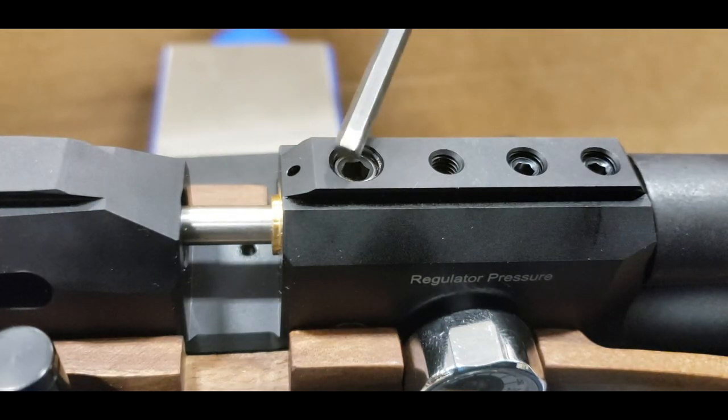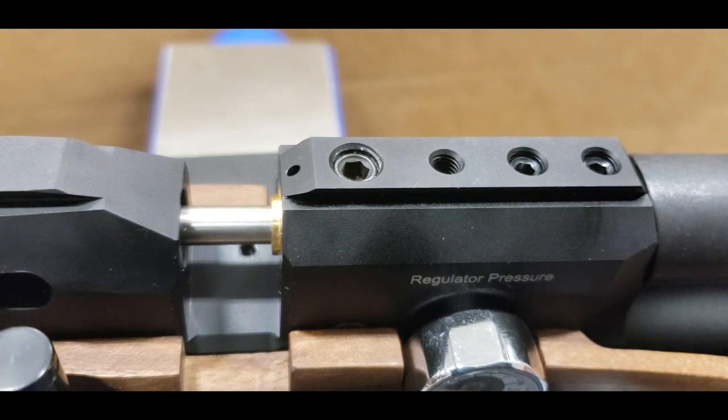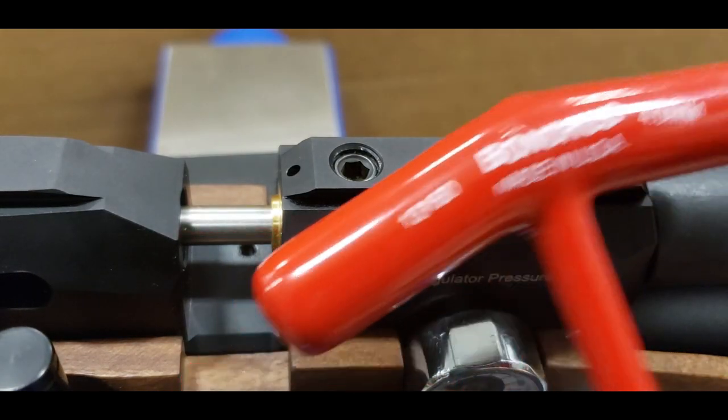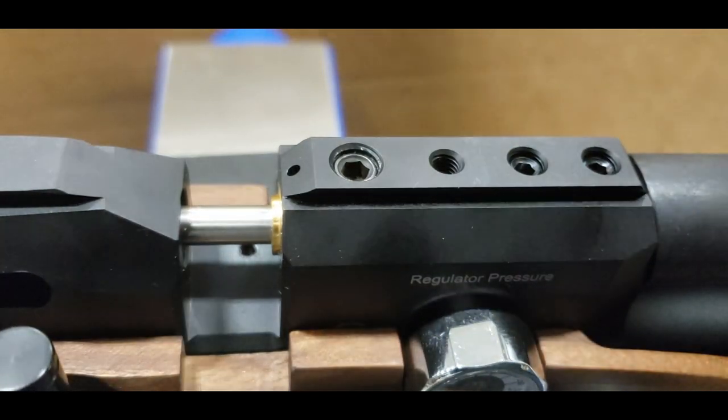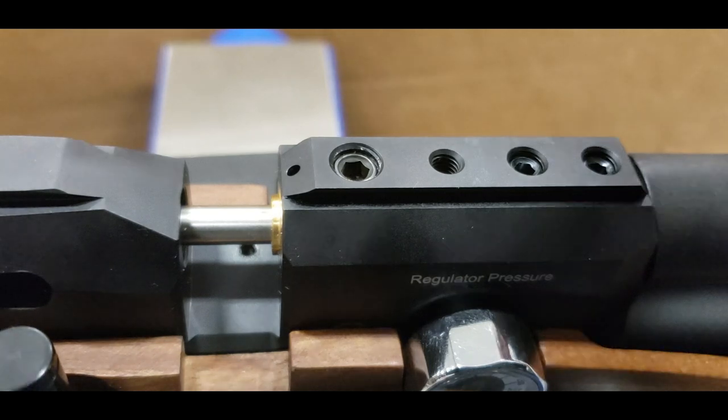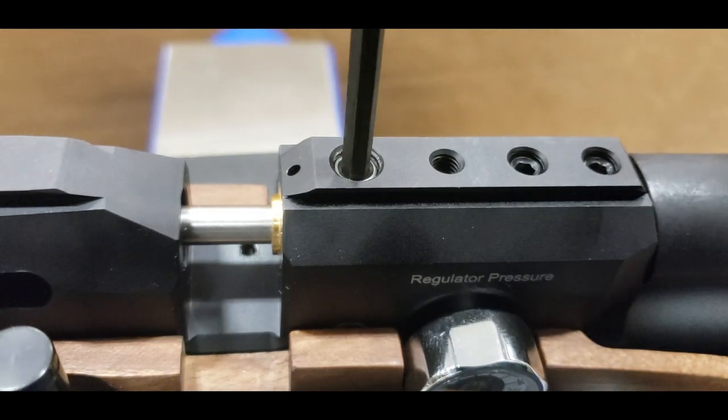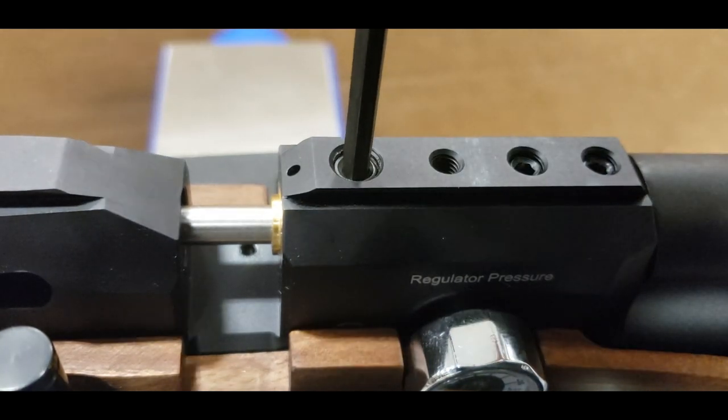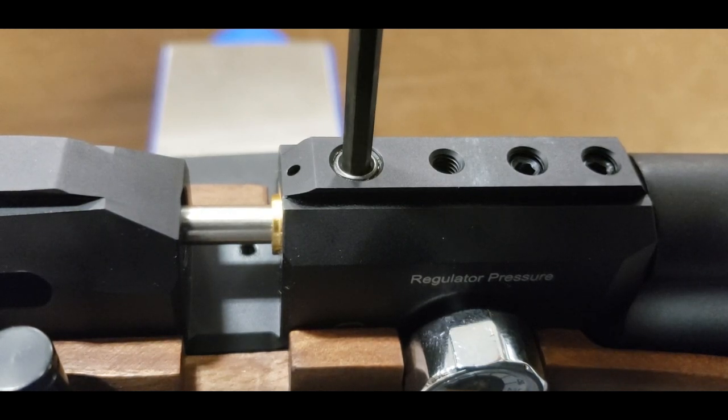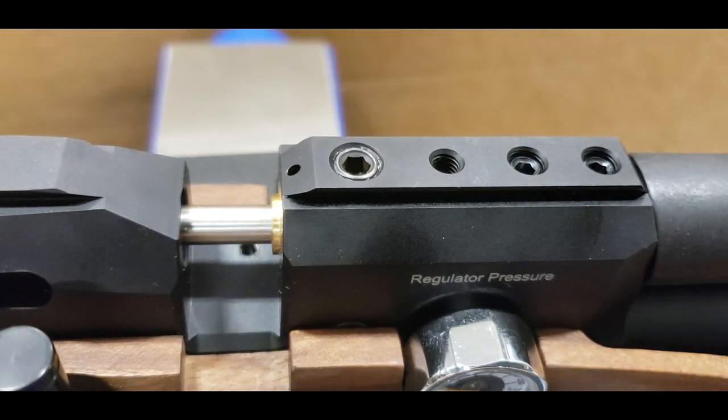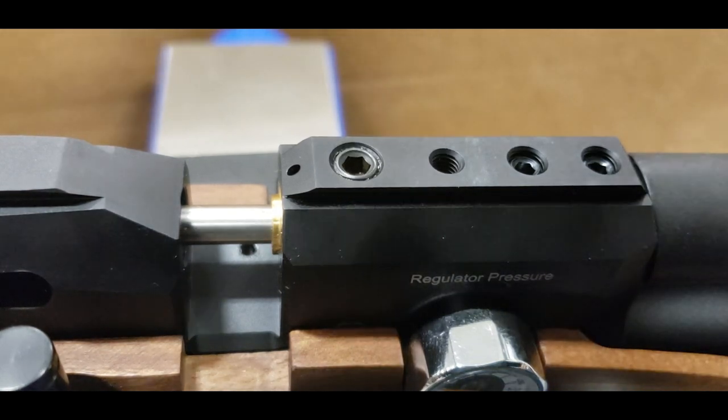Alright, so this first screw right here is a four millimeter Allen. You don't normally have to remove or loosen that one when you remove the barrel, but sometimes it is a little tight, so you just want to back it out maybe like one thread or so just so it's not tight anymore. Normally that'll be held in place by Loctite, so you might need to heat it up a little bit.